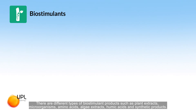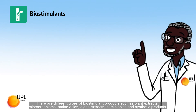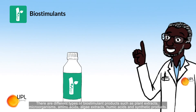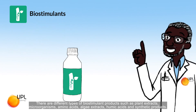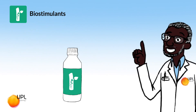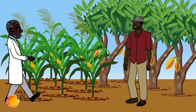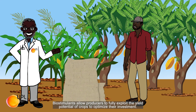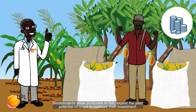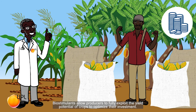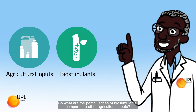There are different types of biostimulant products, such as plant extracts, microorganisms, amino acids, algae extracts, humic acids, and synthetic products. Biostimulants allow producers to fully exploit the yield potential of crops and to optimize their investment.